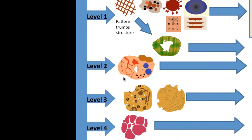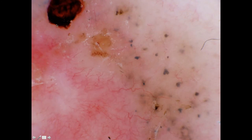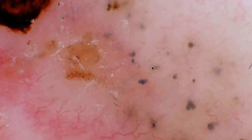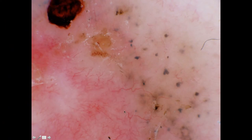At level two we look for criteria of basal cell carcinoma: arborizing telangiectasia, ulceration, leaf-like areas at the periphery, multiple blue-gray ovoid nests, multiple blue-gray dots and globules, crystalline or chrysalis structures, shiny white lines, and spoke-wheel structures. Looking at the slides, we find ulceration, blood crust, yellow serum crust, multiple blue-gray dots and globules, a beginning spoke-wheel structure, arborizing telangiectasia, and some leaf-like areas.